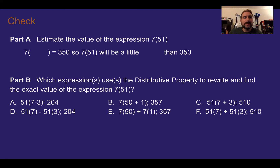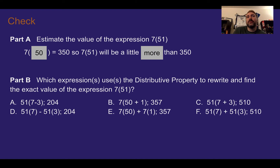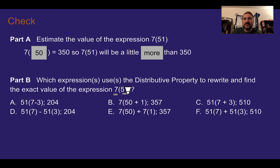Check your answers. For part a, 7 times 51 is approximately 7 times 50, so a little bit more than 350. For part b, which expressions use the distributive property? We need 7 times 51. The first option has 4 instead of 7, so that doesn't work. Option b has 7 times the quantity 50 plus 1, and 50 plus 1 is 51 split apart — that one works.